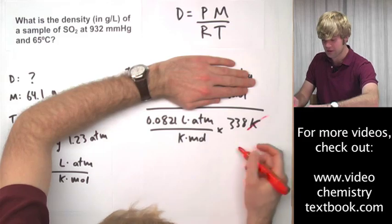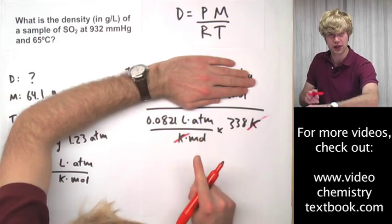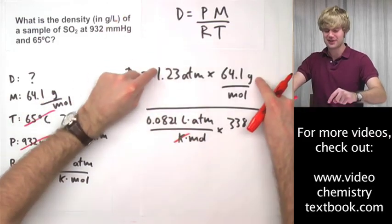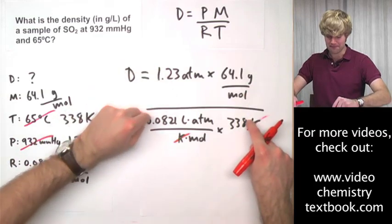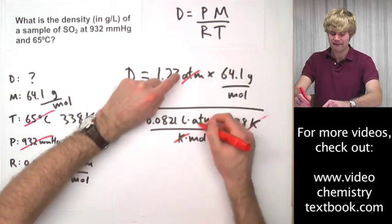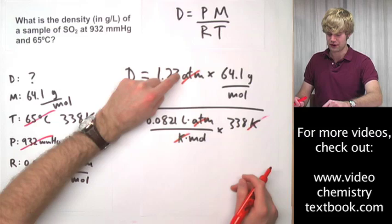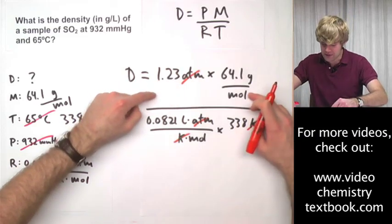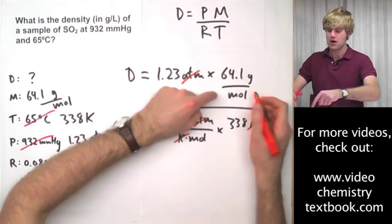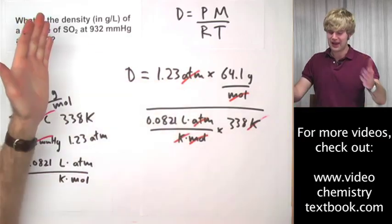All right. Now I look at the top of the top and the top of the bottom. I have ATM here and I have ATM there so they can cancel out. And then I look at the bottom of the top and the bottom of the bottom, moles here, moles there. I've canceled out everything. I'm left with grams and liters.